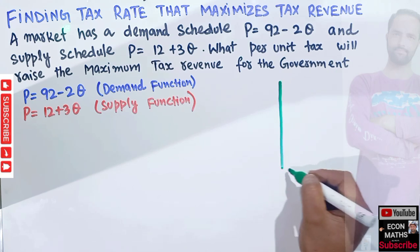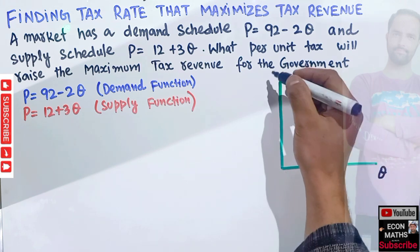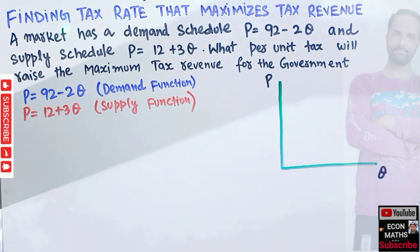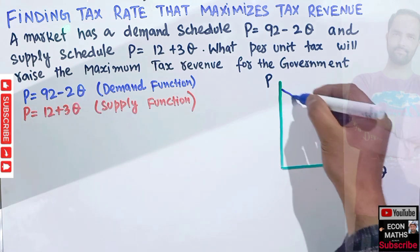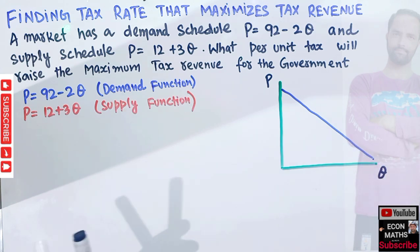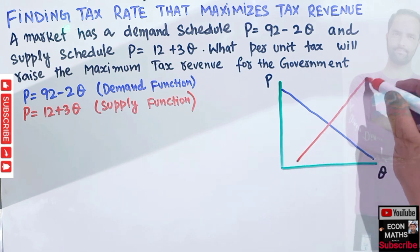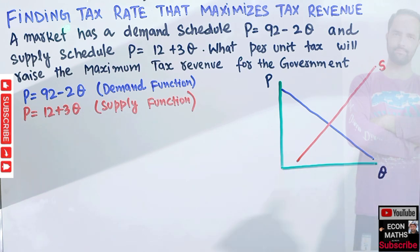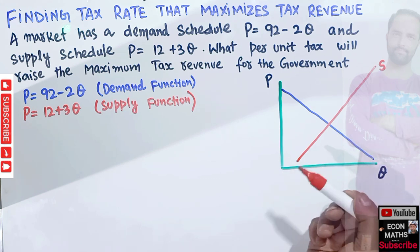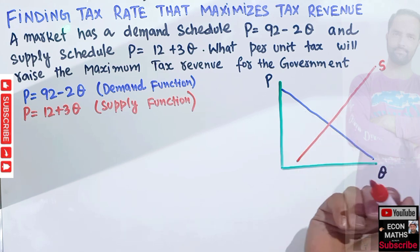Let's graph this to understand it better. We have quantity on the horizontal axis and price on the vertical axis. Our demand function is downward sloping, and the supply function has an intercept of 12. This is our demand function and this is our supply function.